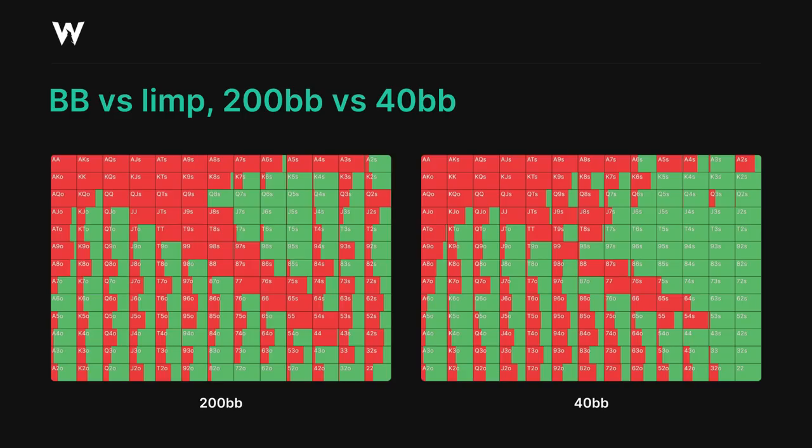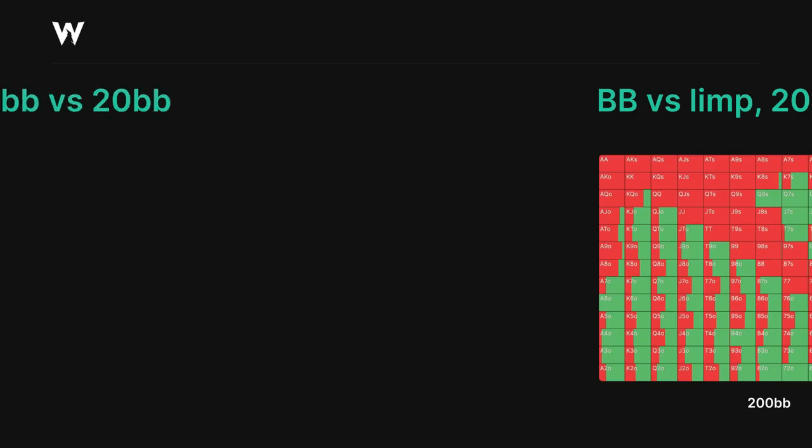This is simply because limped pots don't contribute a significant amount to the big blind's EV here, so it's much more important to simply maximize their EV in raised pots. It's also because even on some of the absolute worst boards for the big blind in a limped pot — usually a double broadway or triple broadway flop — they can still have some amount of two pair combos or straights which can protect their range from enduring massive amounts of pressure from the small blind.